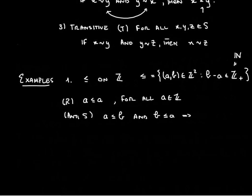It is also transitive because if we have a is smaller or equal to b and b is smaller or equal to c, then a is smaller or equal to c.